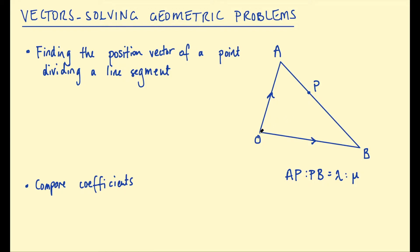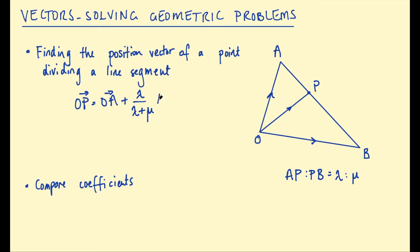We might want to find the position vector of that point. We can use our triangle law: OP equals OA plus AP. We can also represent AP as a fraction of AB. Because we've called this ratio lambda to mu, that fraction is going to be lambda over the total length of the line, which is lambda plus mu. That is the fraction of the vector AB, and then we can represent AB in terms of the position vectors OB and OA. So OP equals OA plus lambda on lambda plus mu, multiplied by OB take OA.